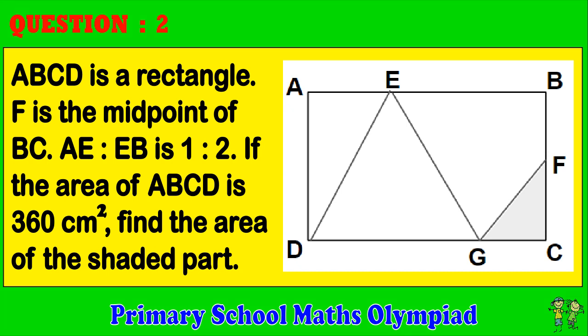Question 2. ABCD is a rectangle. F is the midpoint of BC. The ratio of AE to EB is 1 to 2. If the area of ABCD is 360 cm squared, find the area of the shaded part.